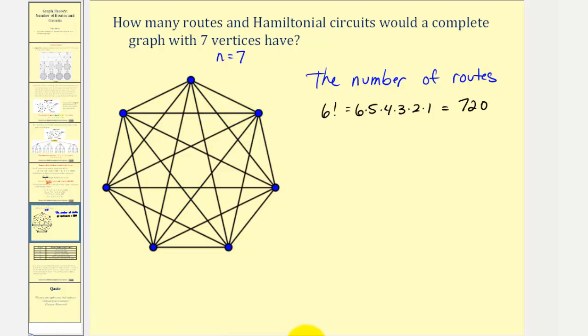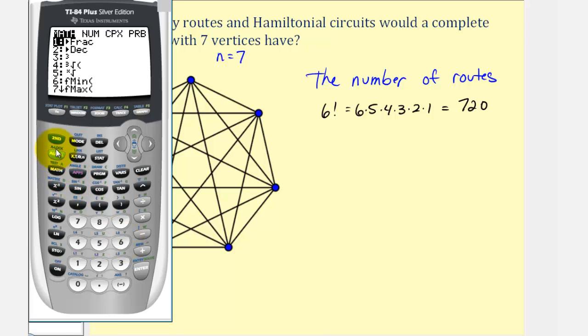On the calculator, we can just enter six, and then math, arrow over to probability, one, two, three right arrows, option four is the factorial option, and enter.